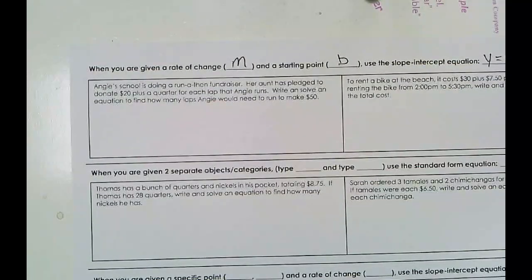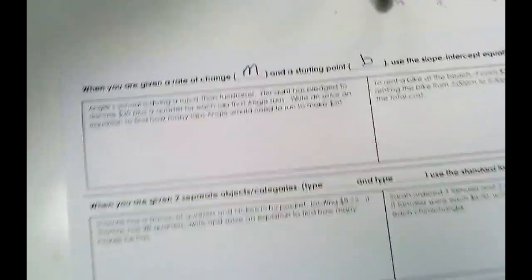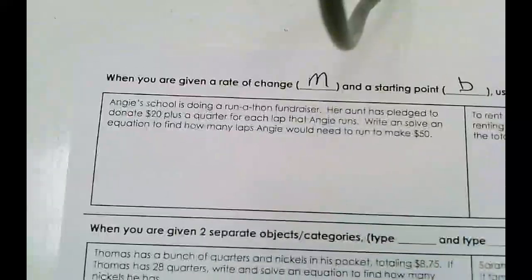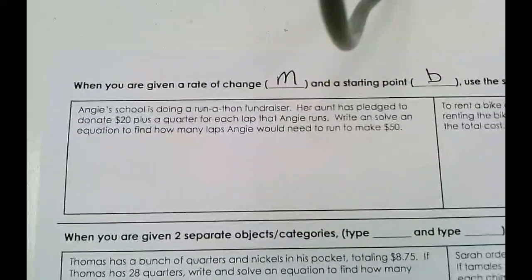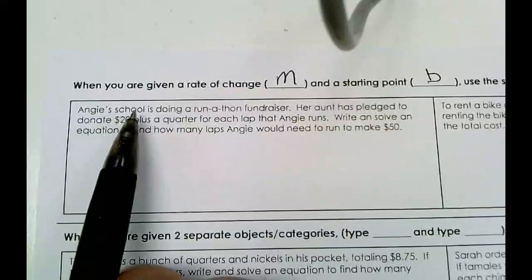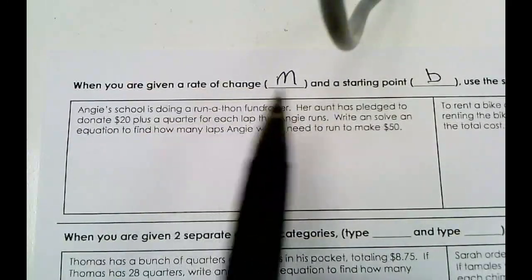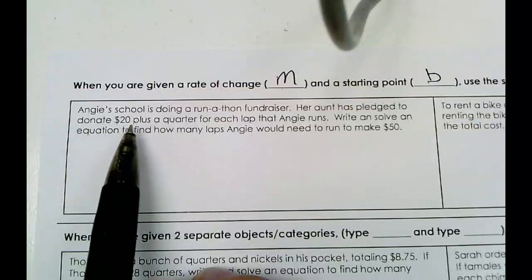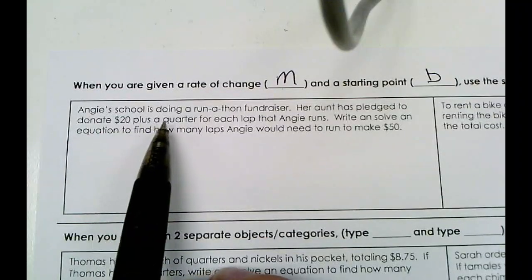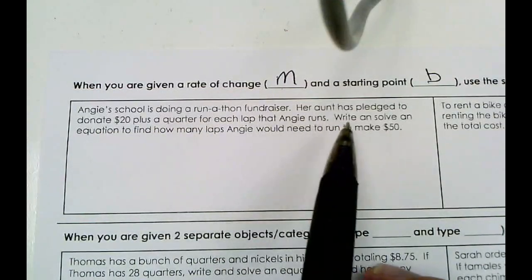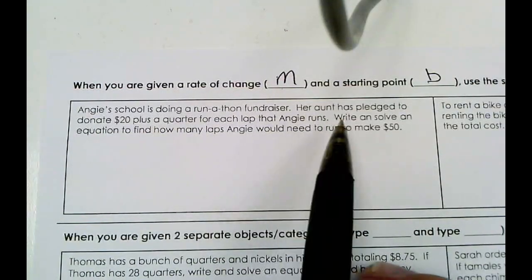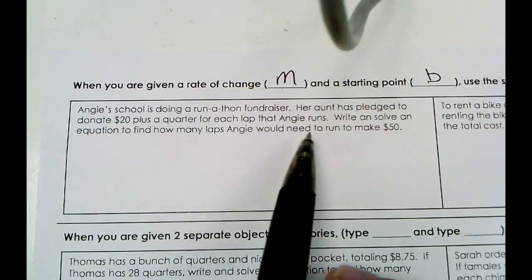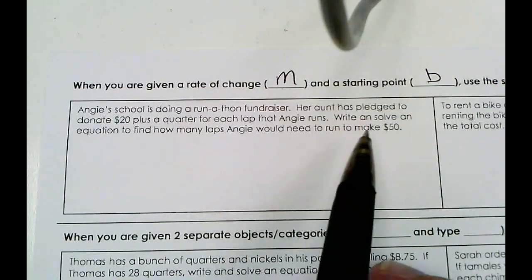Let's dive into this word problem. Angie's school is doing a run-a-thon fundraiser. Her aunt has pledged to donate $20 plus a quarter for each lap that Angie runs. Write and solve an equation to find out how many laps Angie would need to run to make $50.